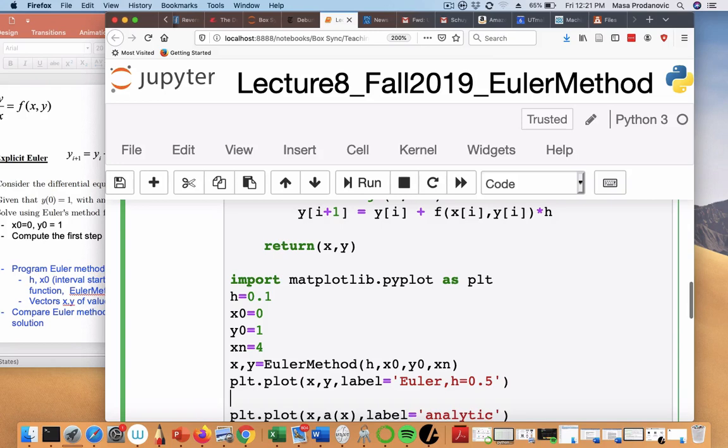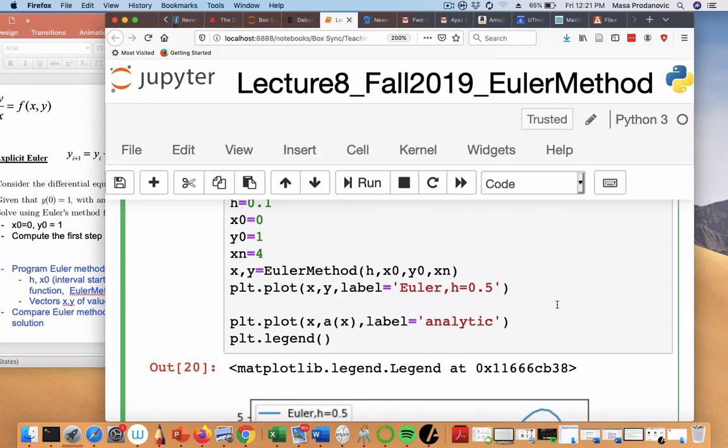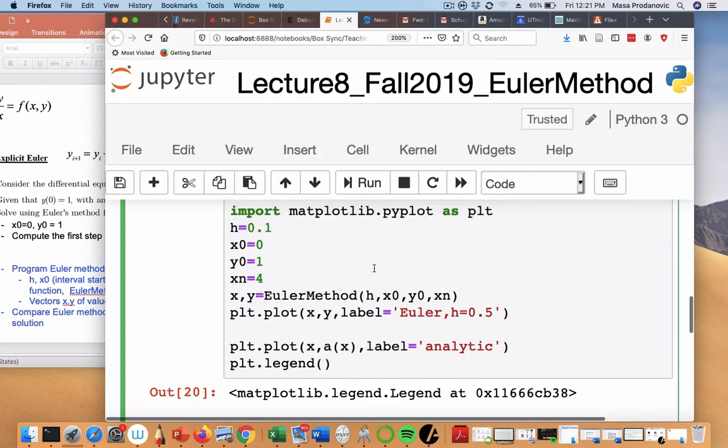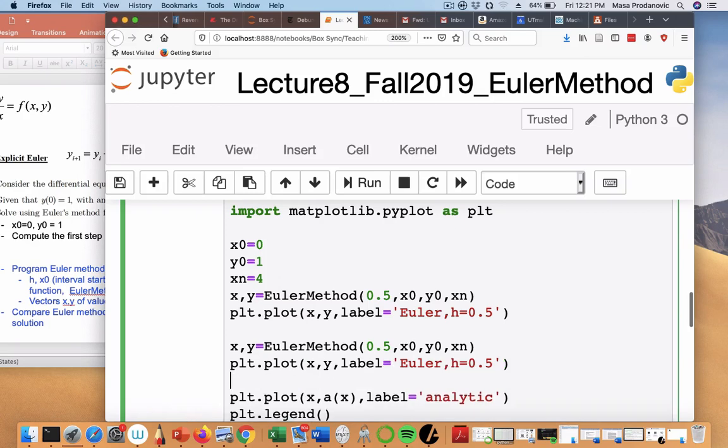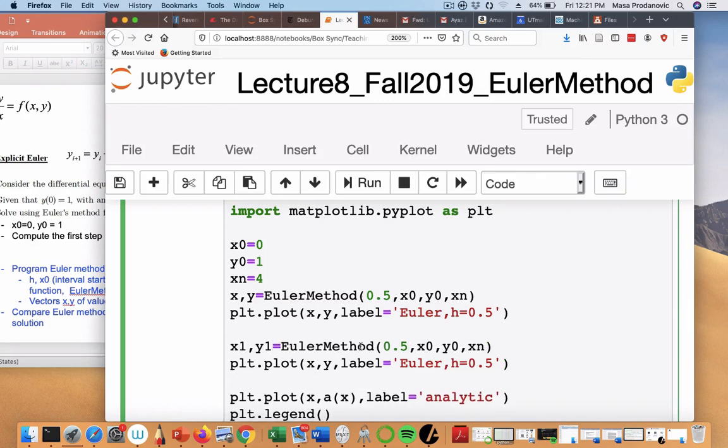Now, what I could do, I could run this for different h values. So I'm going to actually change h. So first time around, I'm going to put it as 0.5. Then I'm going to repeat the same thing and add to the plot. I'm going to call this x1, y1. And I'm going to run it for something finer.